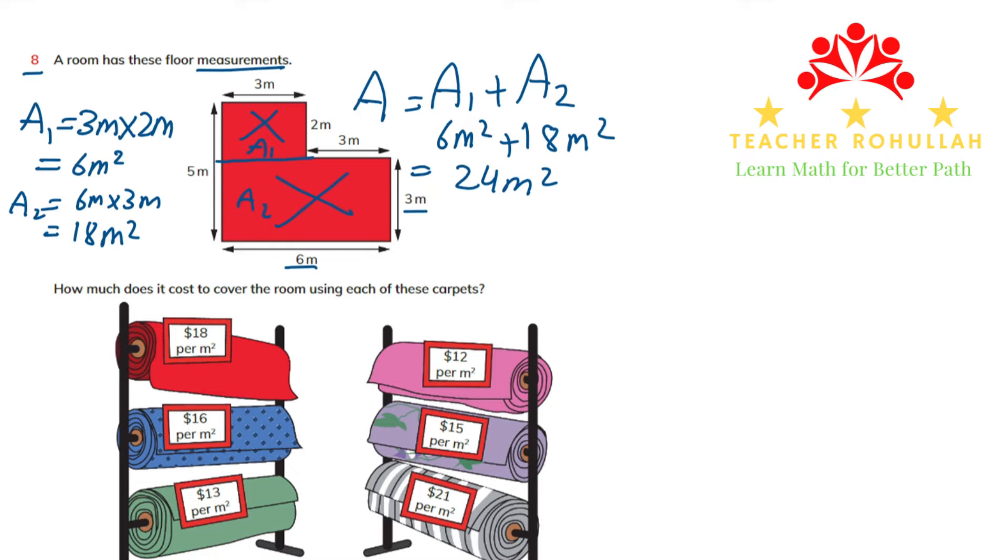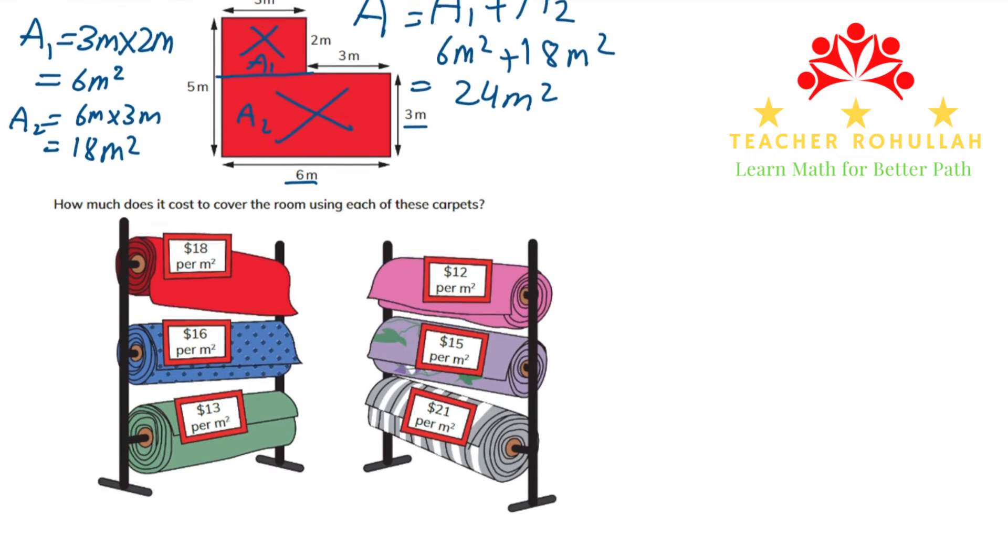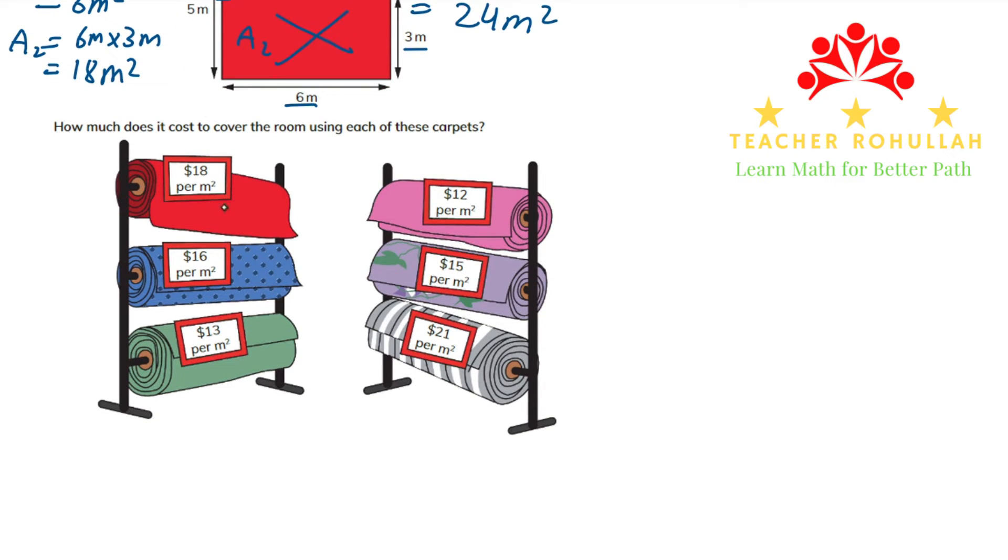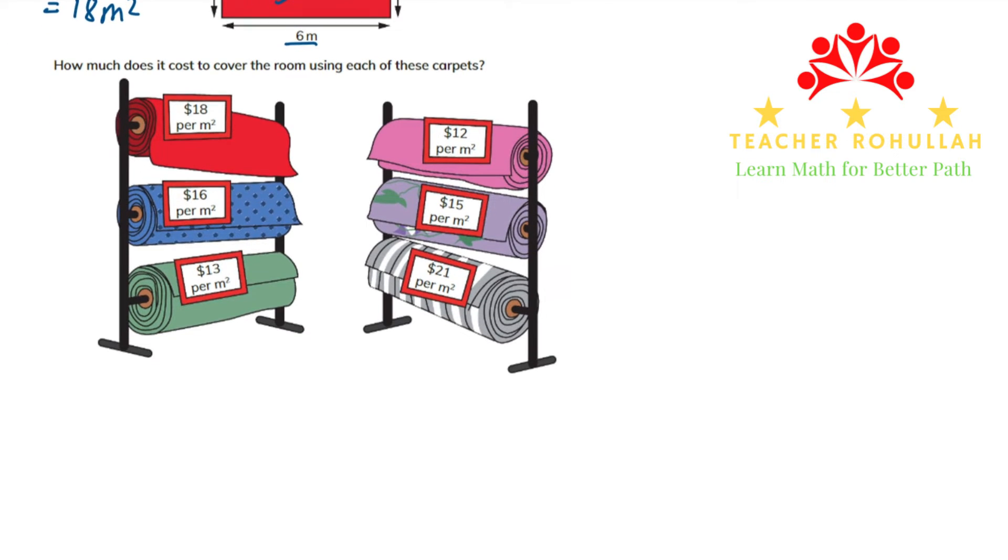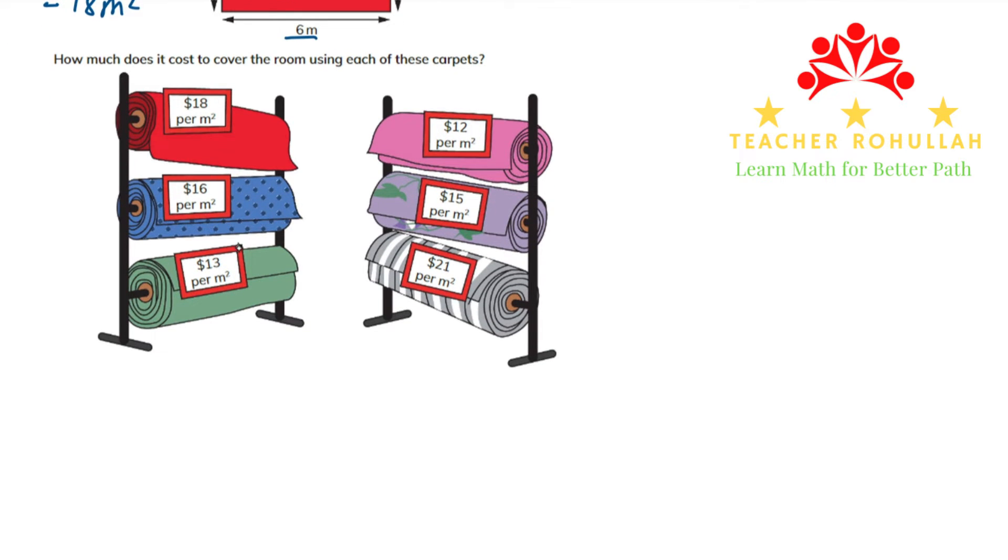Now we can choose from each of the carpets. There are carpets with different prices and they are sold per square meter. The area of the room is 24 square meters. So if you want to buy the first one, which is $18 per square meter, we can multiply 24 by 18 and find out how much it cost to buy the carpet for that room.